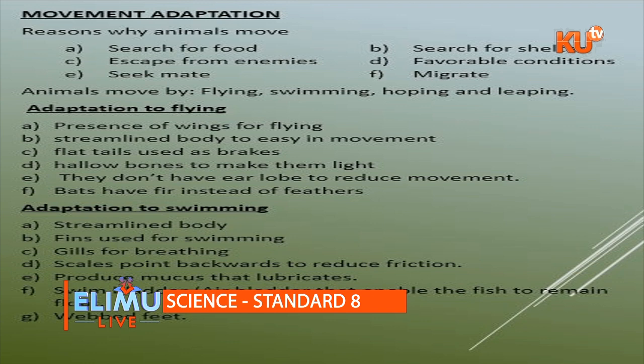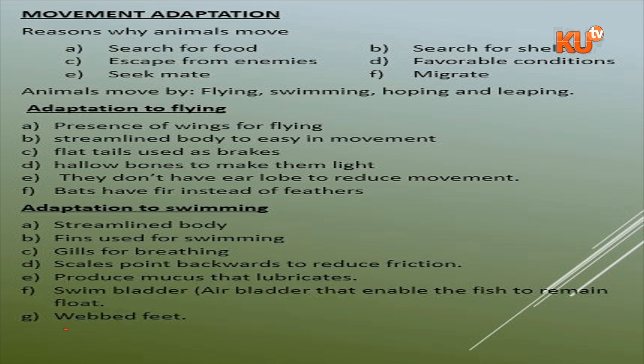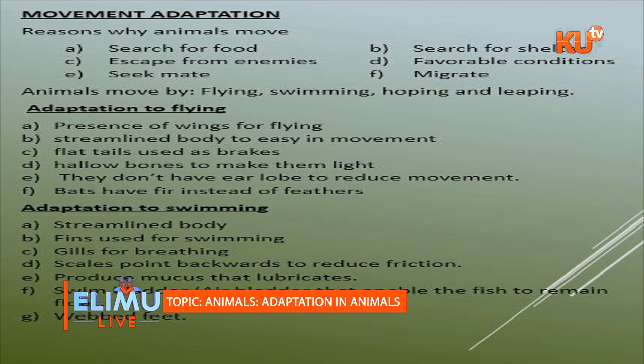Birds also have hollow bones — bones without bone marrow — so that they are light and flight can be easy. They don't have earlobes, which helps reduce drag during movement. Bats, which also fly, have fur instead of feathers.